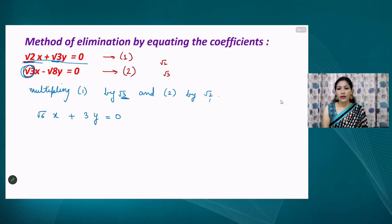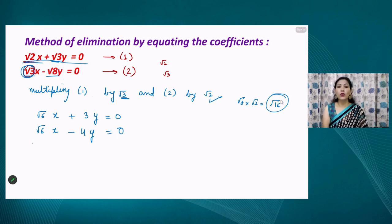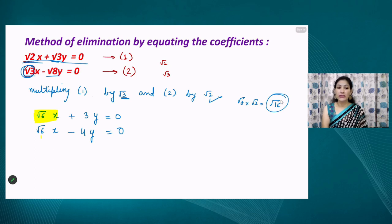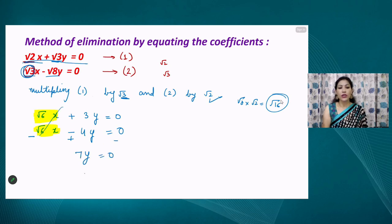Multiplying the second equation by √2 gives us √6x − √16 y = 0, and √8 × √2 = √16 = 4, so the second equation becomes √6x − 4y = 0. Now both equations have √6 as the coefficient of x with the same sign, so we subtract the equations to eliminate x. On subtracting, we get 7y = 0, giving y = 0.